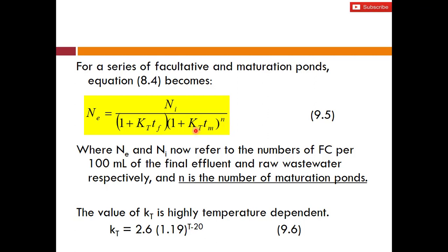In Equation 9.5, tf is the retention time in the facultative ponds and tm is the retention time in the maturation ponds — don't mix them up. The decay factor kT is the same for both. kT is highly temperature-dependent, so it must be adjusted if the temperature differs from 20°C; otherwise it is taken as 2.6 per day.